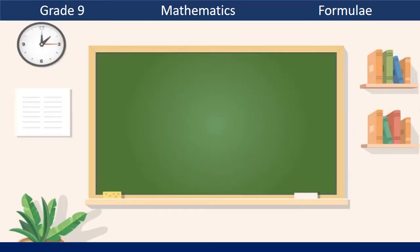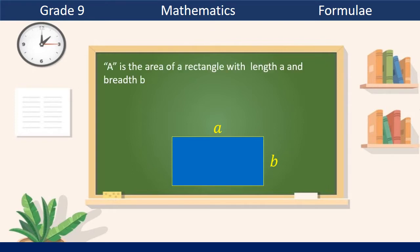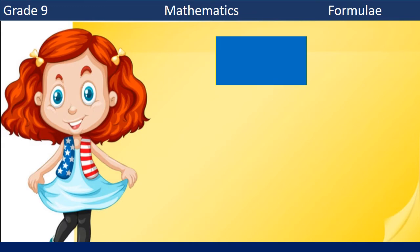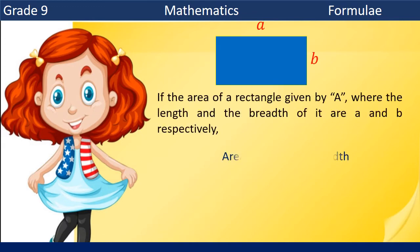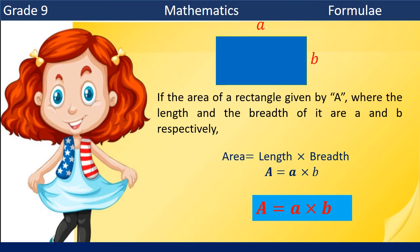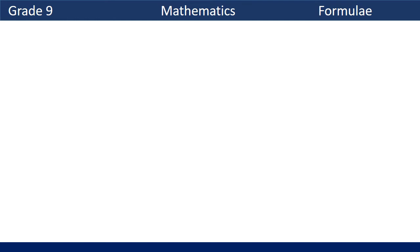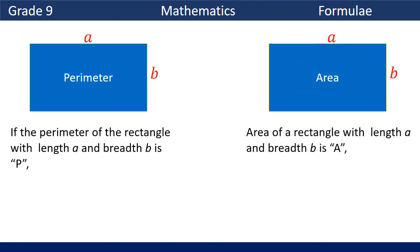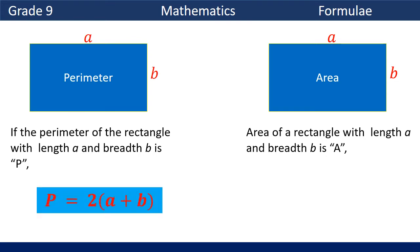In another activity, you can see a rectangle with length a and breadth b. If the area is given by capital A, the relationship we can write is: the area of a rectangle can be calculated by multiplying its length and breadth. So area equals length times breadth, therefore A equals a times b. We have now built two relationships: perimeter p equals 2 times (a plus b), and area A equals a times b. These kinds of relationships are known as formulae in mathematics.